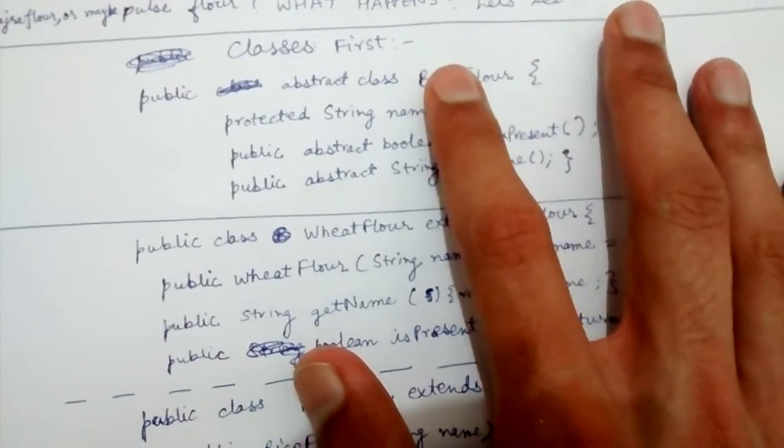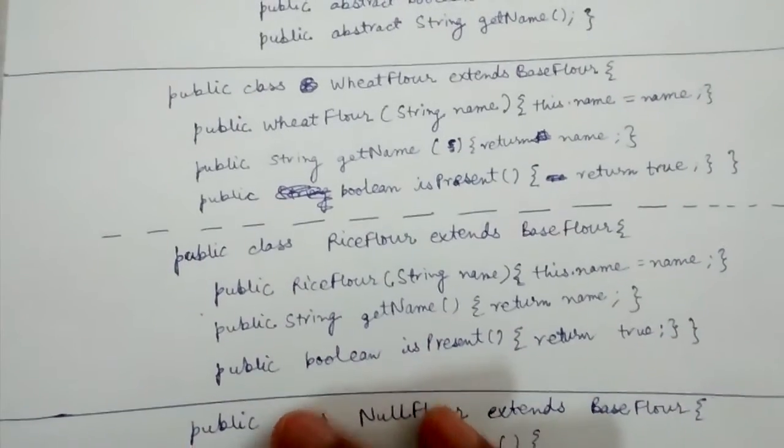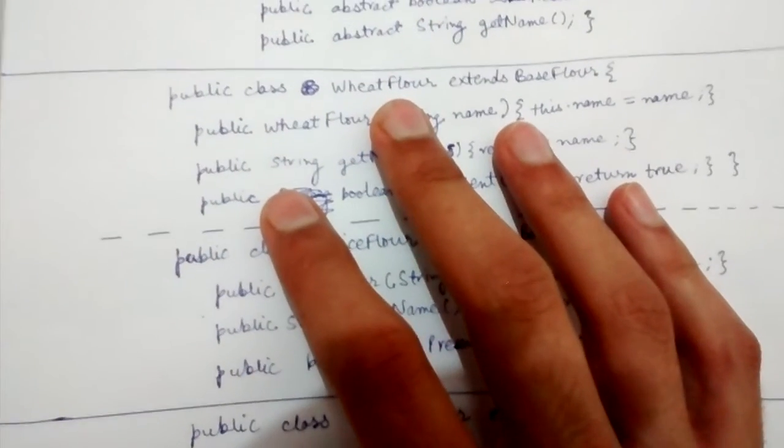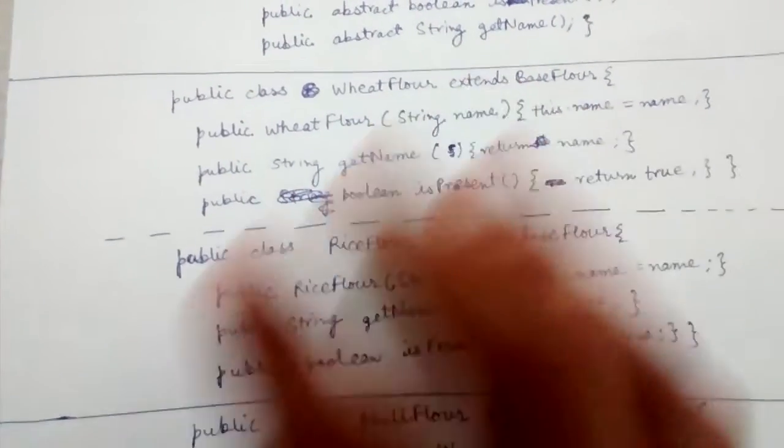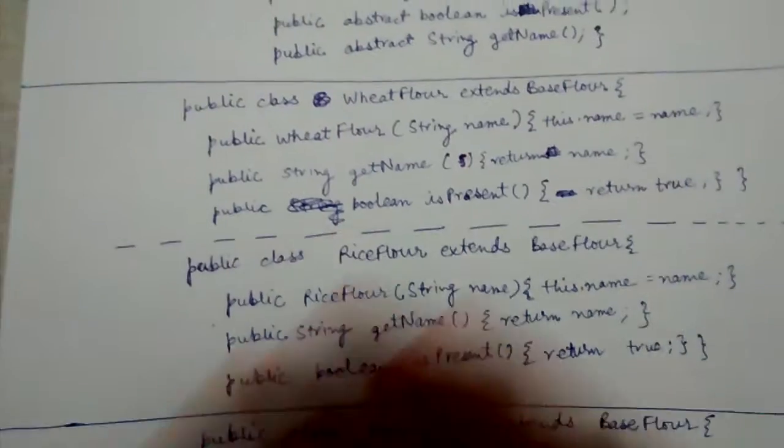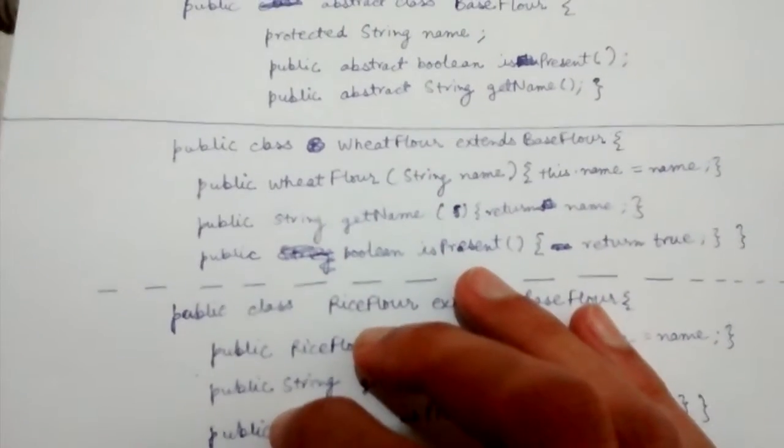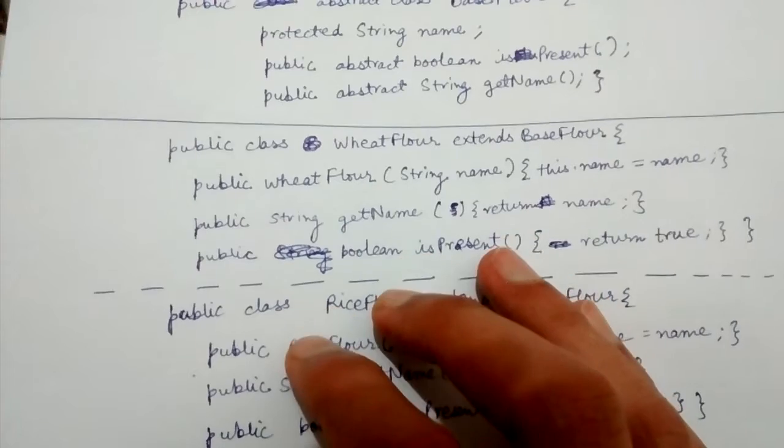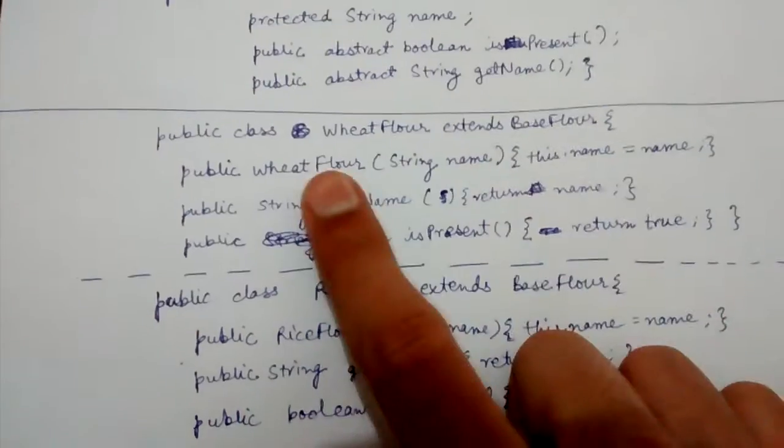WheatFlour is a class which extends BaseFlour, and RiceFlour is another class which extends BaseFlour. Both of them have implementations for these methods and their constructors.